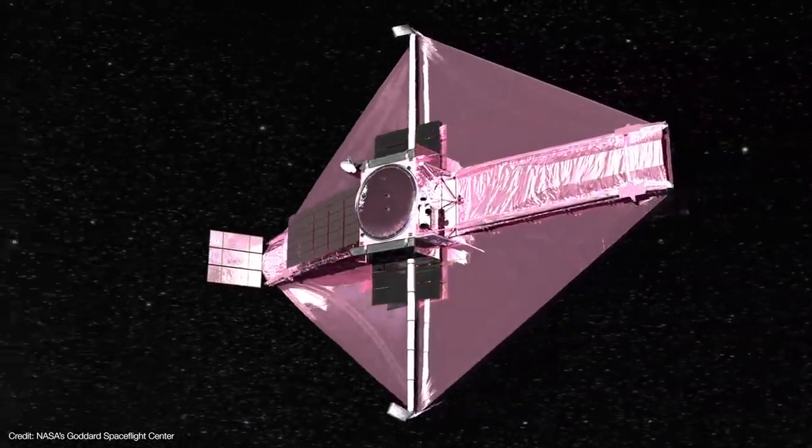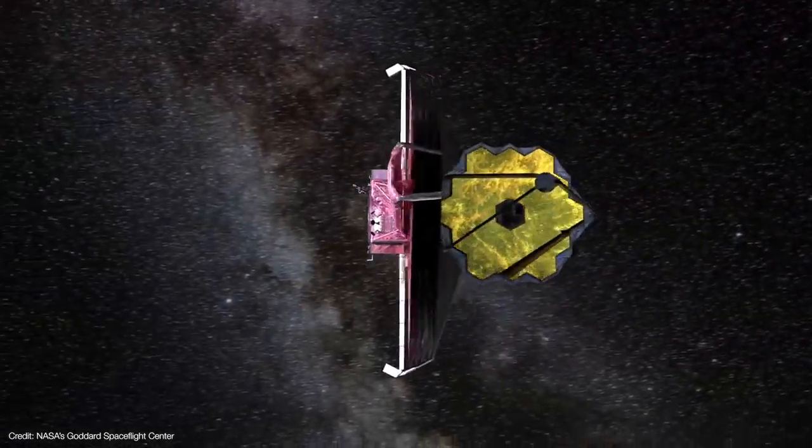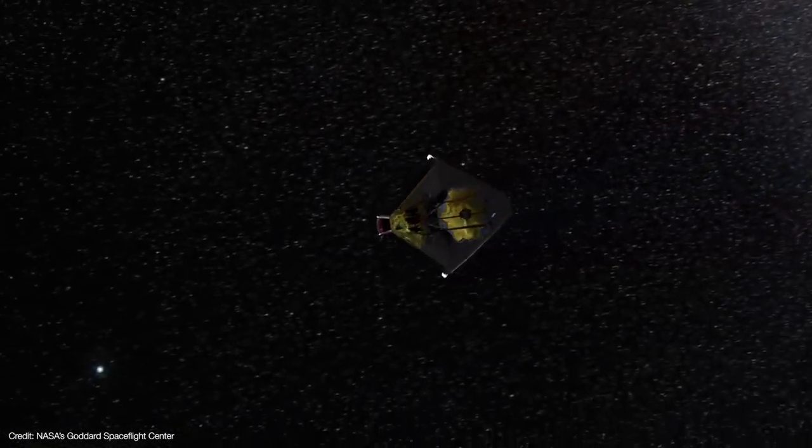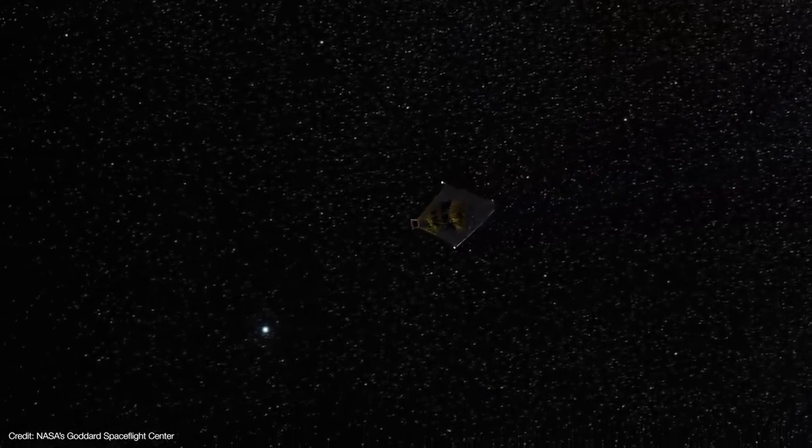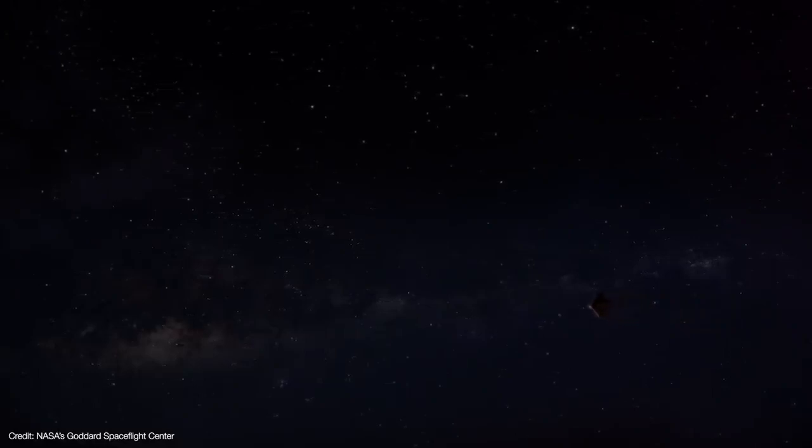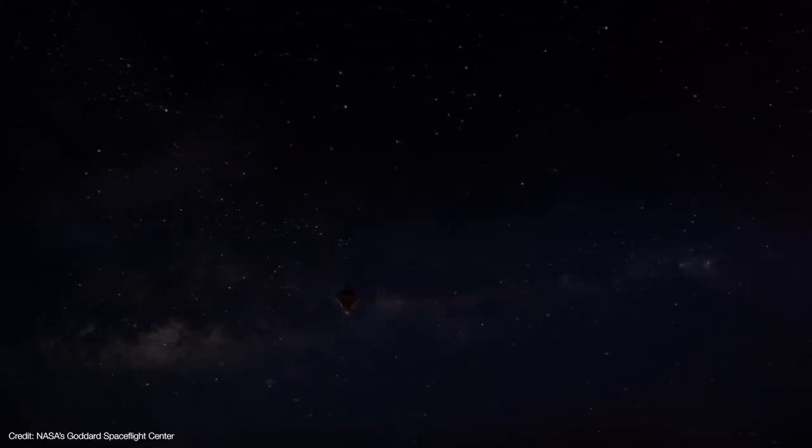The exact timing and duration of those burns are calculated by the flight dynamics team at NASA's Goddard Space Flight Center. They'll do this by monitoring Webb's telemetry data and using ranging data from the deep space network to pinpoint Webb's location and its motion at all times. They even take into account gravitational perturbations from the moon and even the gravitational perturbations of the rest of the planets.